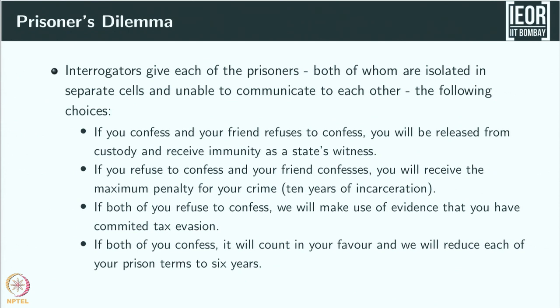If you confess and your friend refuses to confess, you will be released from custody and receive immunity as a state's witness, while your friend will be prosecuted using your evidence. If you refuse to confess and your friend confesses, the situation is symmetric with roles reversed. If both refuse to confess, the police do not have sufficient evidence and can only give a very little punishment. But if both of you confess, they have evidence against each and both get a reduced term of imprisonment.